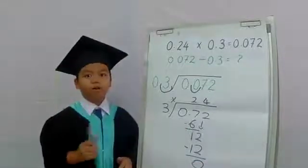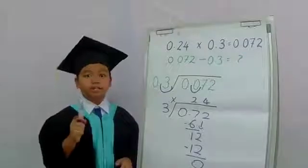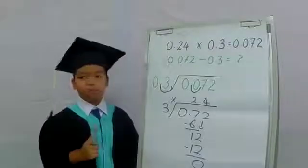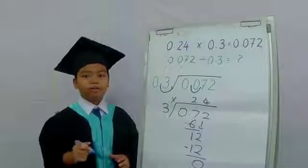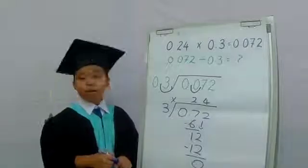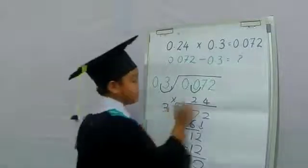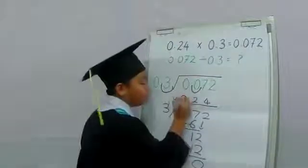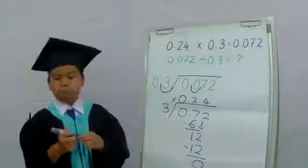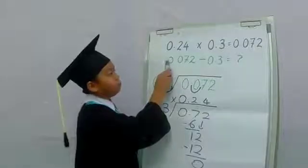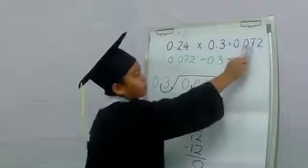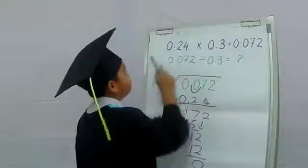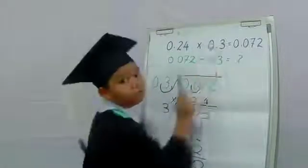But 24 is obviously not the final answer because it is more than 0.72. So we need to include the decimal point, placing it directly above the decimal point in the dividend. Our answer is 0.24. This proves that 0.072 is the correct answer of 0.24 times 0.3.